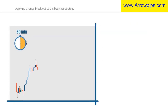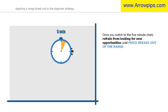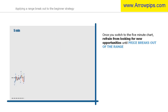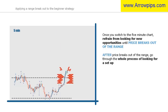To include this filter into the beginner strategy, you start by determining the direction of the 30-minute chart as per usual. Once you switch to the 5-minute chart, you refrain from looking for any new opportunities until the price breaks out of the range. After the price has broken out of the range, you go through the whole process of looking for a setup.